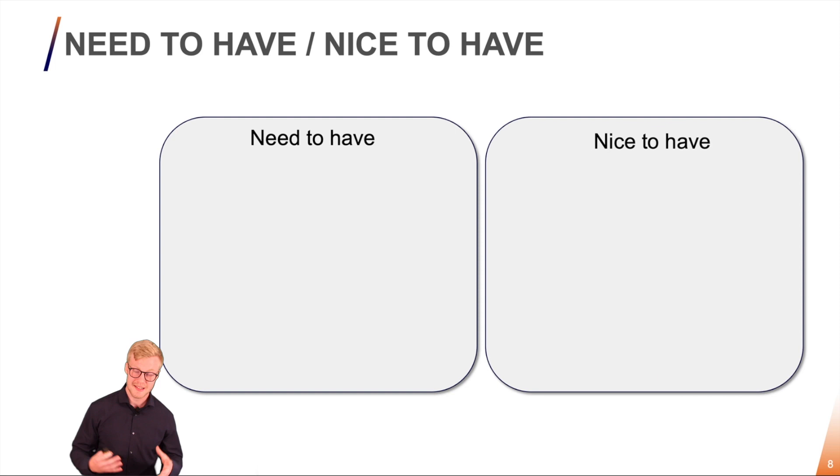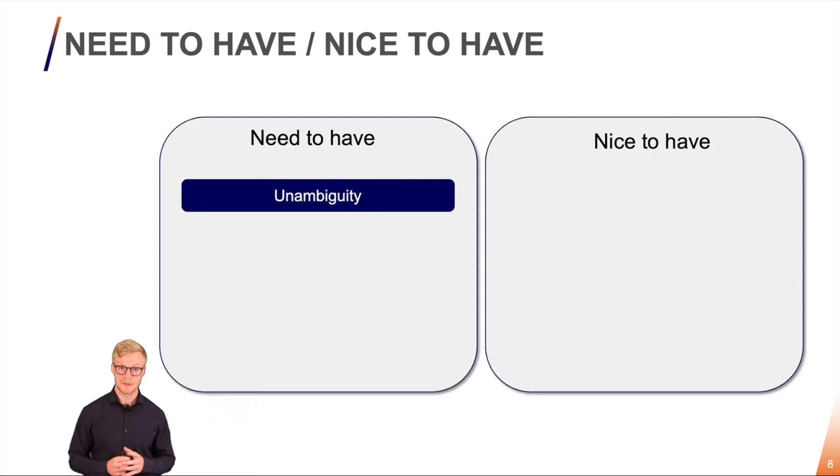Alright, so designing a naming system clearly isn't that easy. So let's try to take a step back and look at some needs to have and some nice to have. On the need to have side, we definitely need it to be unambiguous. That's the whole reason why we want to design a naming system in the first place. So one name needs to point to only one component.